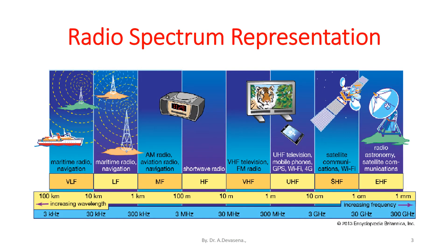In this radio spectrum we are classifying the frequency band into very low frequency band, low frequency band, medium frequency band, high frequency band, very high frequency band, ultra high frequency band, super high frequency band, and extremely high frequency band. The various devices used under each frequency range are represented in this diagram.